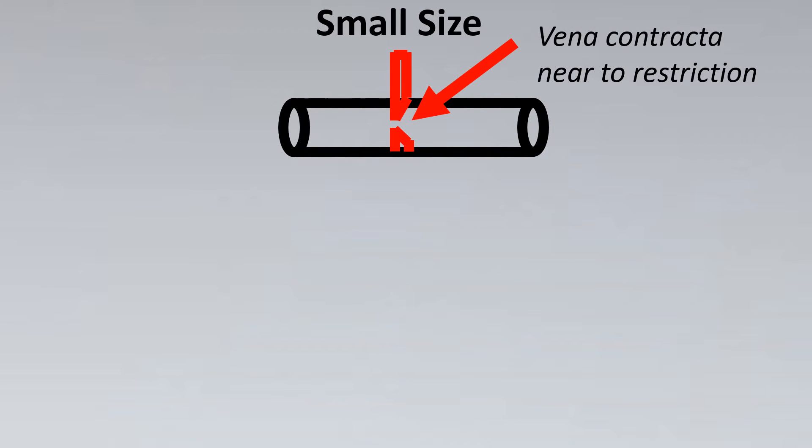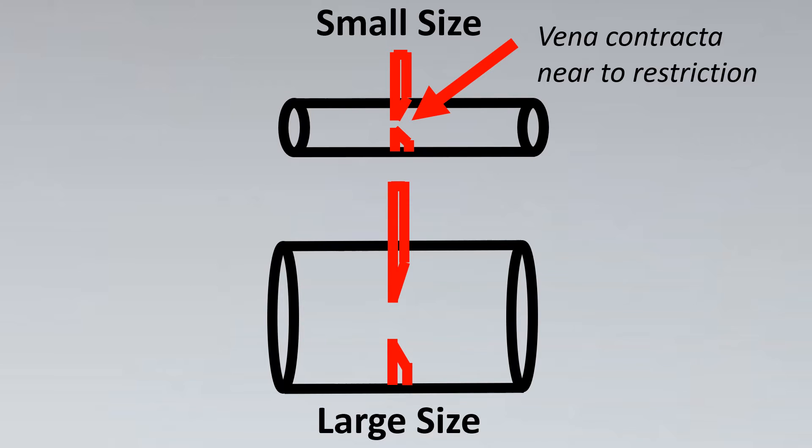This concept depends upon line size. So for smaller line sizes the Vena contracta is near to the restriction. However, for larger line sizes the Vena contracta would be away from the restriction. Does that have any issue on our tapping selection? Absolutely, it has an effect on the selection.